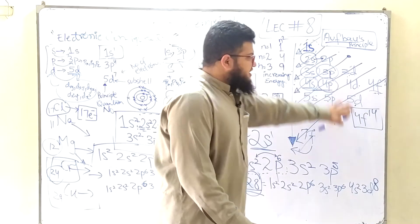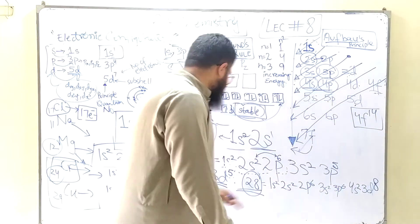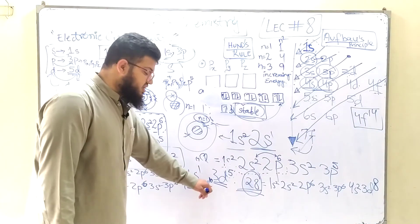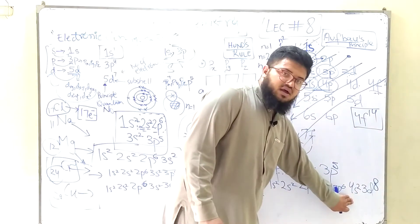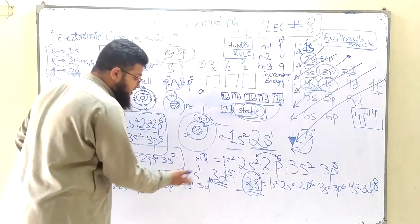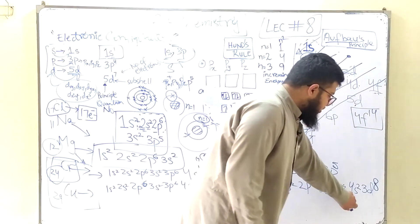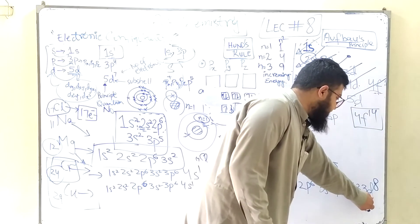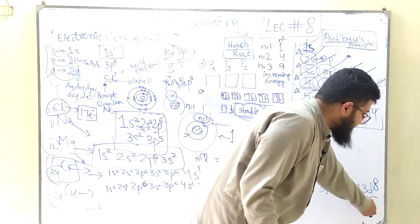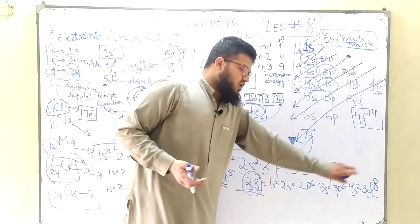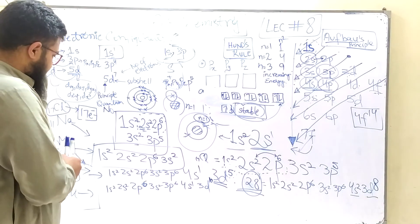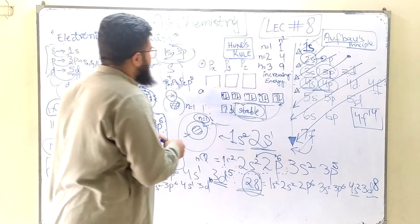Remember, you are going to follow the Aufbau principle in every case except for these two: chromium and copper. Because in chromium and copper, it's the 3d that seems to be filled before the 4s. But in the case of atomic number 28, it's the 4s2 that is filled first before the 3d, so 3d8 is filled last. This is how you write down the electronic configuration.